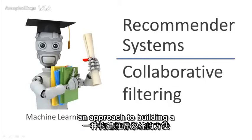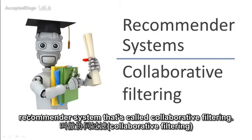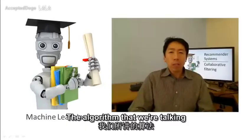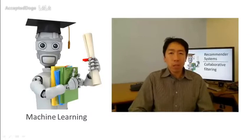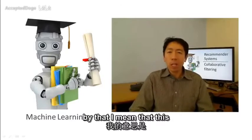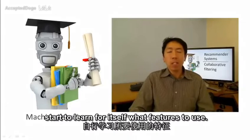In this video, we'll talk about an approach to building a recommendation system that's called collaborative filtering. The algorithm that we're going to talk about has a very interesting property that it does what is called feature learning. And by that I mean that this would be an algorithm that can start to learn for itself what features to use.